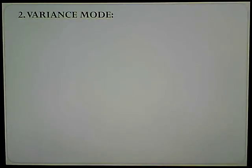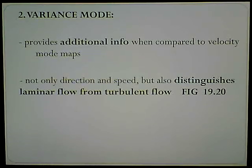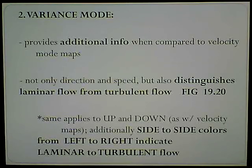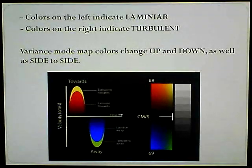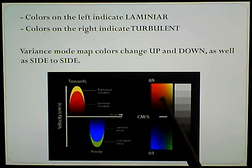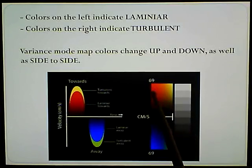The other type is a variance mode. This provides a little bit more info when compared to the velocity mode maps. You not only have direction and speed, but you also distinguish laminar flow from turbulent flow. If you look at figure 1920, you will see that not only do we have the up and down as with velocity maps, but we also have the side-to-side colors from left to right. Just like you're reading, it goes from laminar to turbulent.